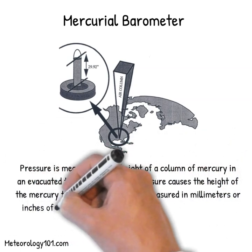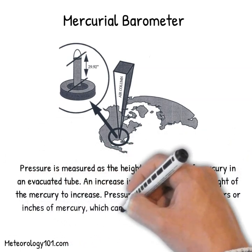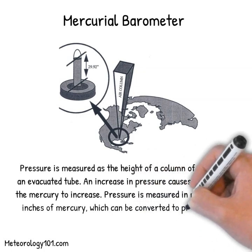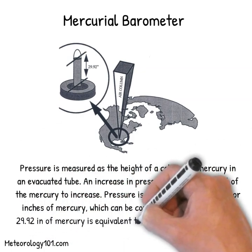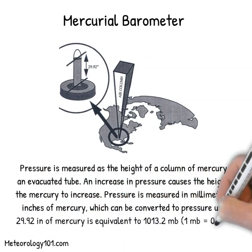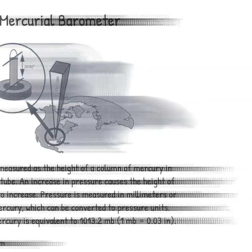29.92 inches of mercury is equivalent to 1013.2 millibars. 1 millibar equals 0.03 inches.